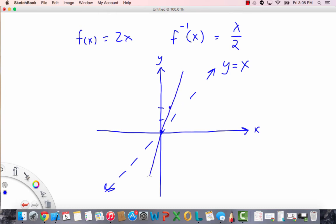So f of x looks roughly like this. Let's change colors here. f inverse of x is a line with a slope of 1 half so it still has a y-intercept of 0 but it goes up 1 over 2 and f inverse of x looks something like this. So notice that this line y equals x acts kind of like a mirror and it reflects f of x across the mirror to become f inverse of x and vice versa.